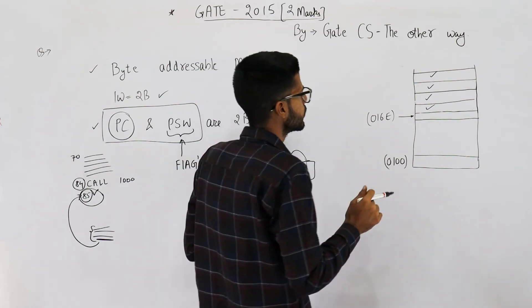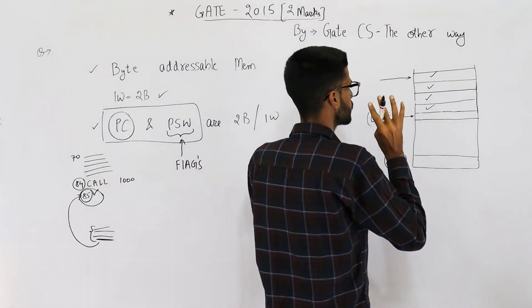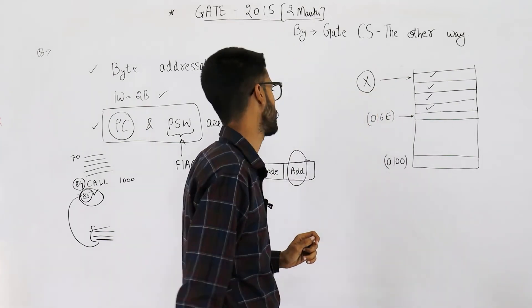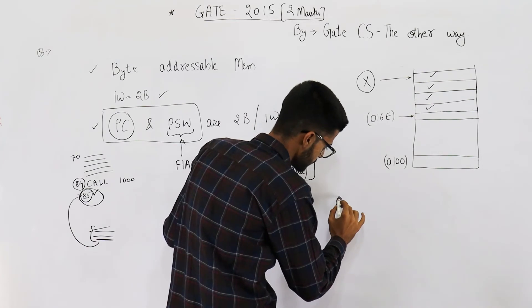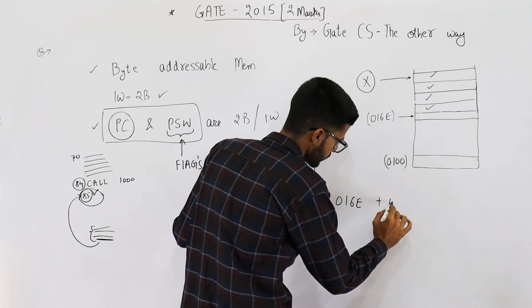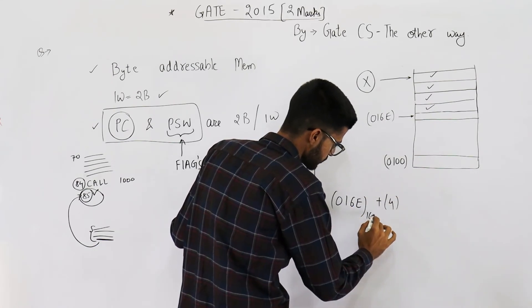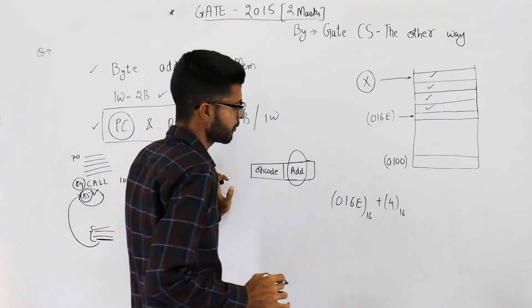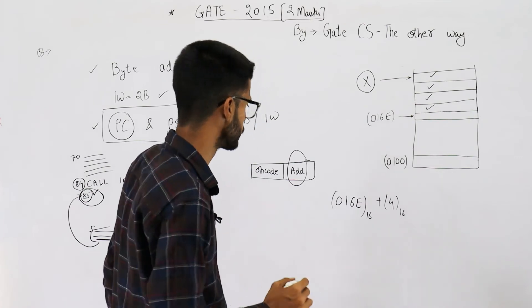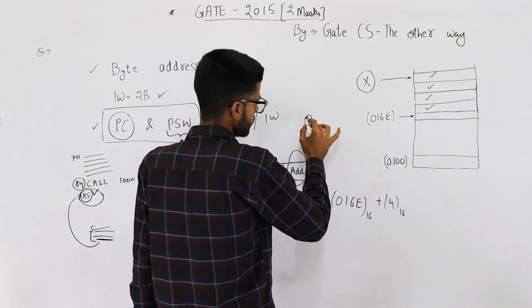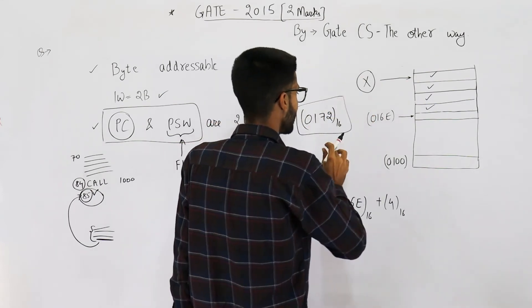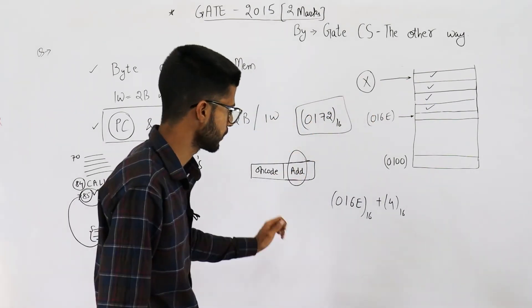Now you need to find what is top of the stack. Top of the stack will be 016E plus 4 in hexadecimal. If you perform this addition, you will get 0172 in hexadecimal. This is your answer.